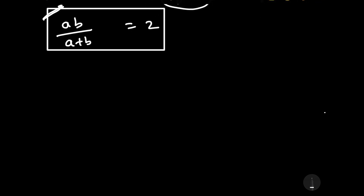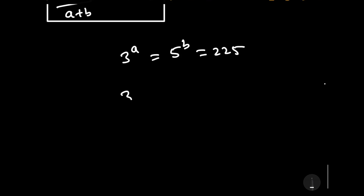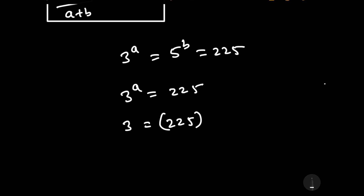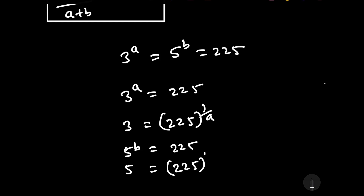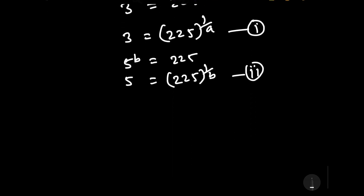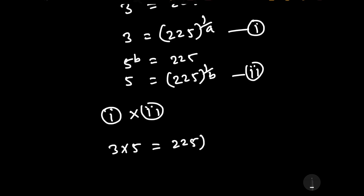Now let us solve this question with another method, which is much easier. It is given that 3 to the power A is equal to 5 to the power B is equal to 225. So 3 equals 225 to the power 1 by A — this is equation 1. And 5 equals 225 to the power 1 by B — this is equation 2. Let us multiply equations 1 and 2: 3 times 5 equals 225 to the power 1 by A times 225 to the power 1 by B.